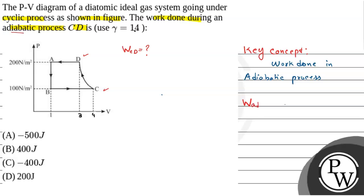That is W adiabatic equals P2V2 minus P1V1 by 1 minus gamma, where gamma is the adiabatic constant and P2V2 is the final pressure and final volume, and P1V1 is initial pressure and initial volume.